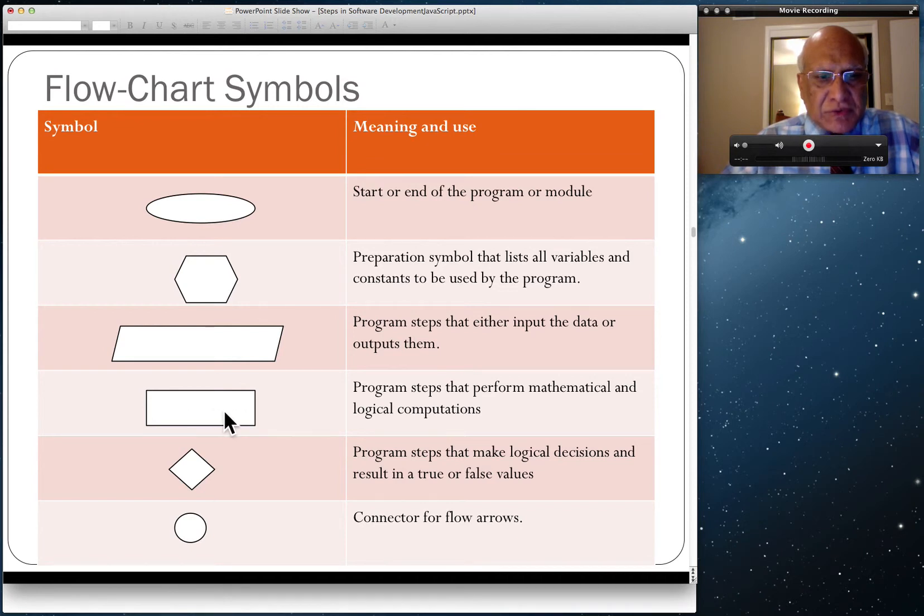These also show if you're doing logical computations. A diamond shows program steps that make logical decisions and result in a true or false outcome. A circle connects various parts of the flowchart as needed.